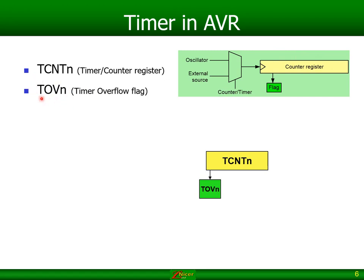TOV is the timer overflow flag. As I've said before, if your counter register rolls over — let's say it's an 8-bit register and it rolls over from 255 to zero — there's a flag that will be set, and this is that flag. This TOV flag sits in the register called TIFR, which stands for Timer Counter Interrupt Flag Register. That is where you will find this specific flag, and that's for rollovers.